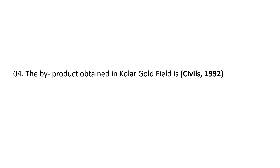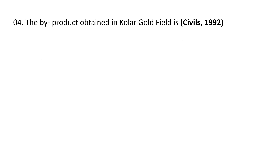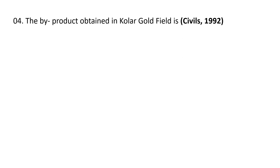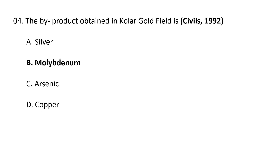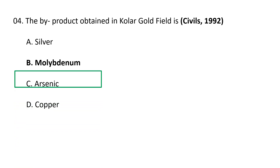Next question: The byproduct obtained in KGF (Kolar Gold Field) is A. Silver, B. Molybdenum, C. Arsenic, D. Copper. The correct answer is B. Molybdenum. It is a byproduct in KGF, the Kolar Gold Field.